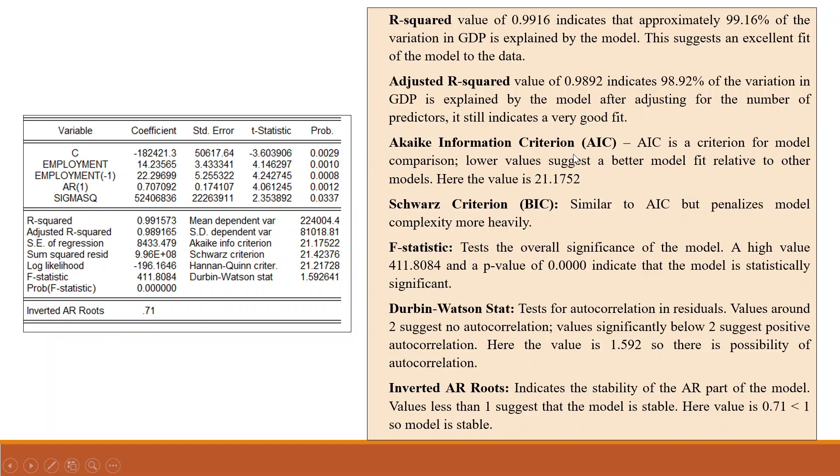Akaike information criterion, AIC is a criterion for model comparison. If we are having two models, the model which is having a lower value is a better model. Lower value suggests a better model fit relative to other models. Here the value is 21.1752.